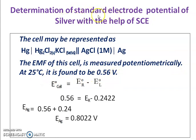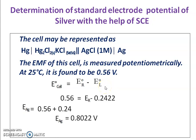To determine the electrode potential of silver, we use the equation: EMF of the cell = electrode potential of the cathode (right of salt bridge) minus electrode potential of the anode (left of salt bridge). The EMF of the cell is 0.56 volts, and the electrode potential of the SCE (the anode) is 0.2422 volts. Therefore, the electrode potential of silver (the cathode) is calculated as 0.56 + 0.2422 = 0.8022 volts.